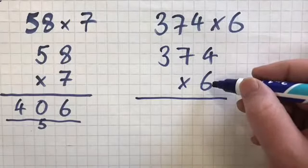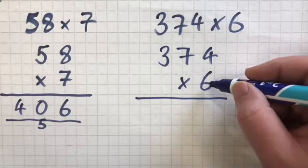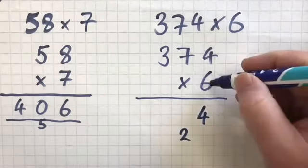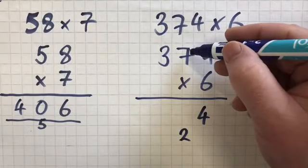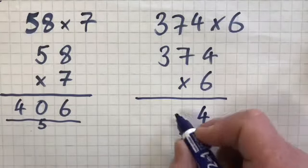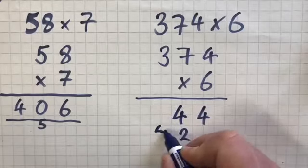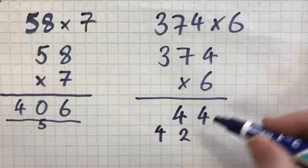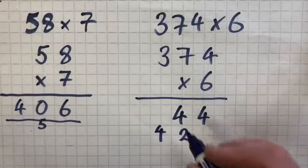This time we're going to be multiplying everything by 6. So 6 times 4 is 24. 6 times 7 is 42, plus the 2 gives us 44. And 6 times 3 is 18, plus the 4 is 22.